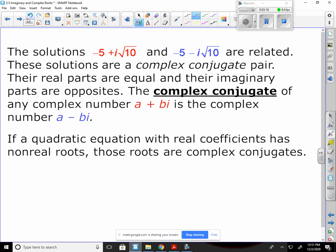That takes us to our next type. If we have the solutions of negative 5 plus i root 10, negative 5 minus i root 10, these two are related. And we call it a complex conjugate pair. You'll notice that the real parts are equal to each other, negative 5, and the imaginary parts are opposite.